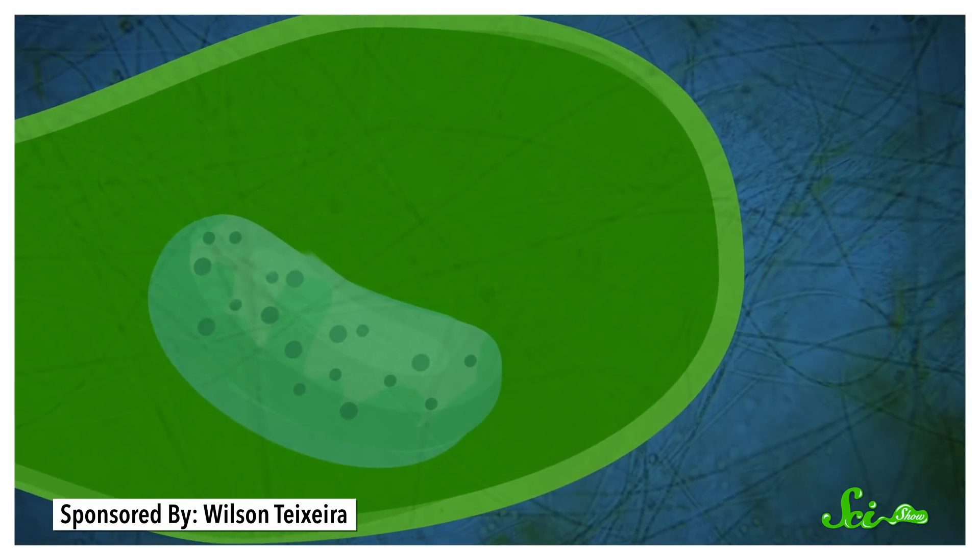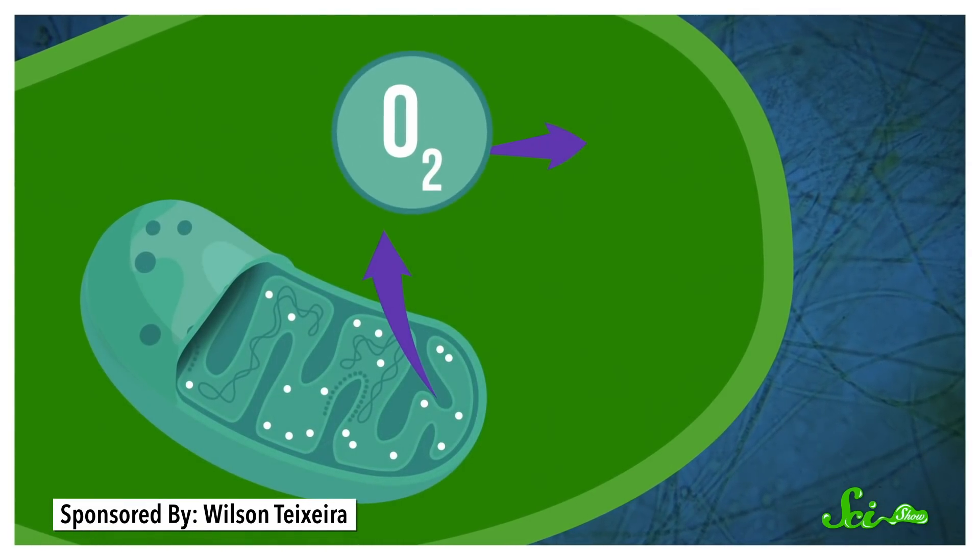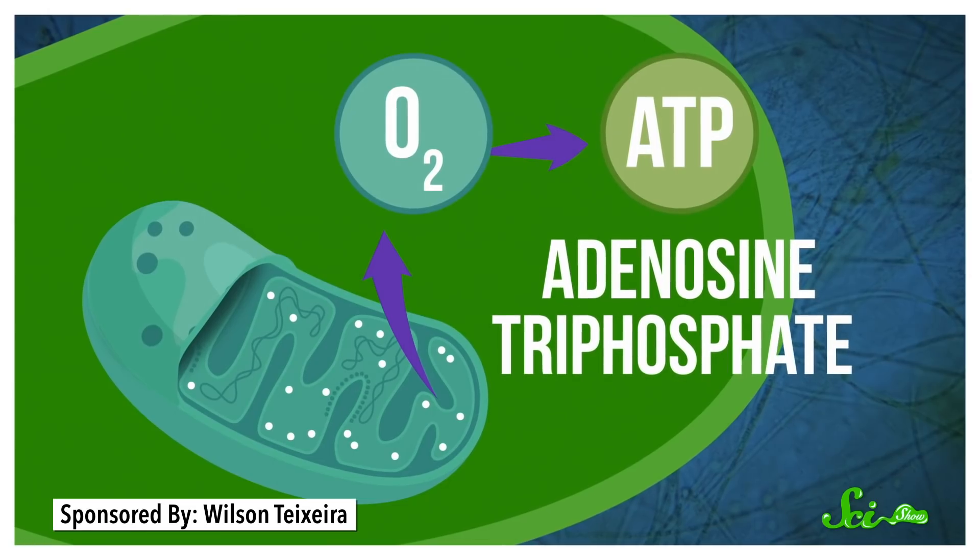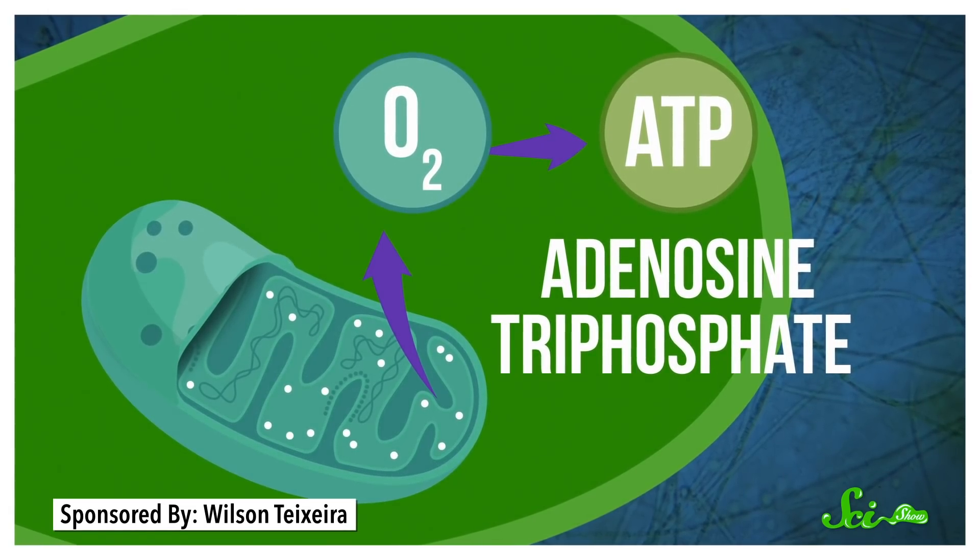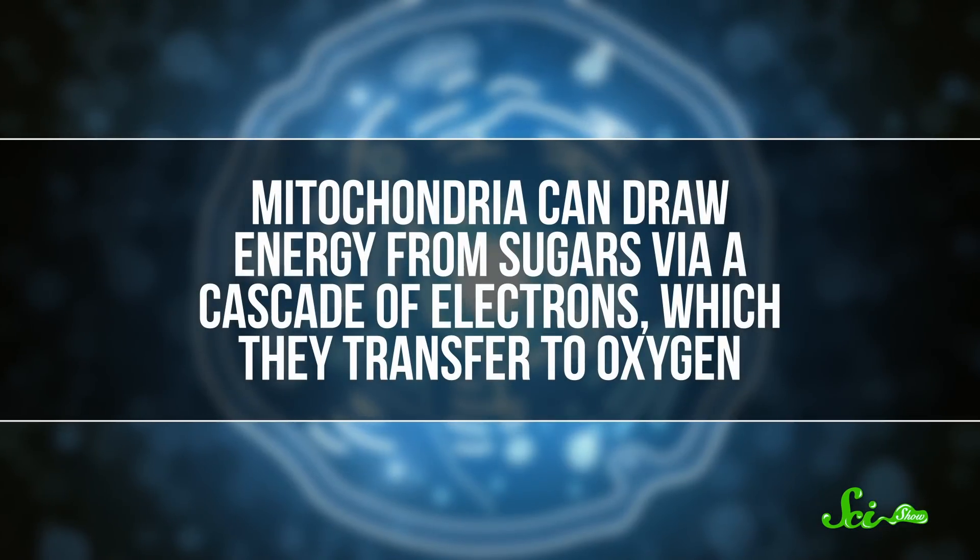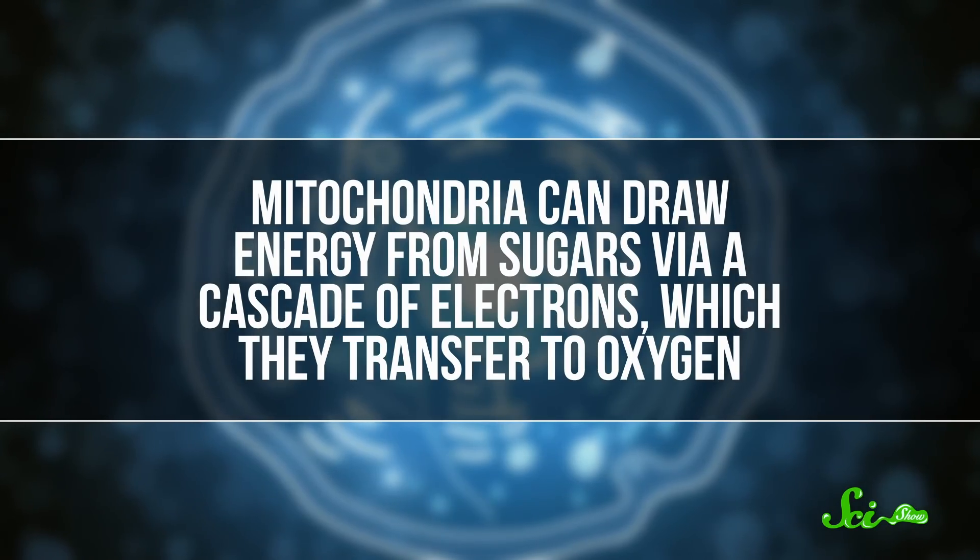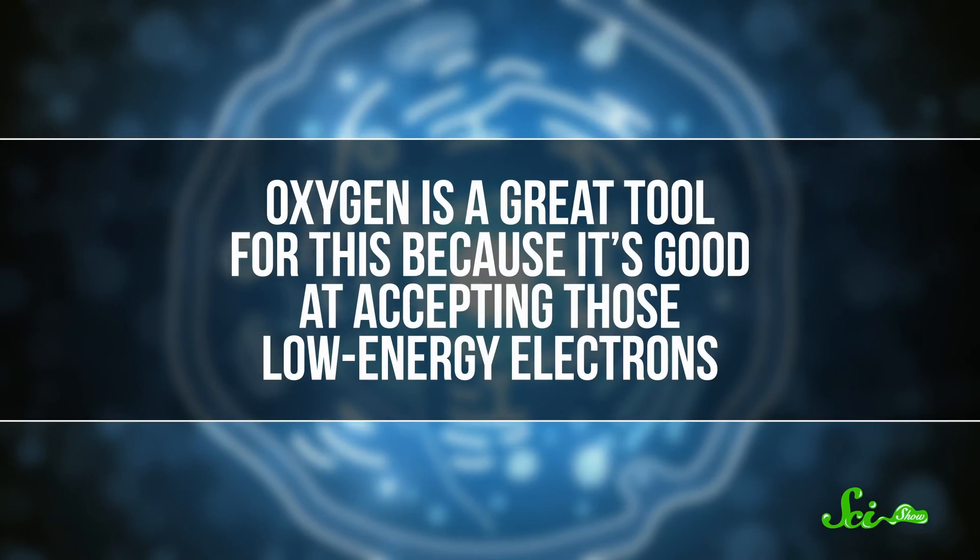Eukaryotes let that bacteria-turned-mitochondria stay because of their special talent. They use oxygen to make adenosine triphosphate, or ATP, the molecule that stores and transfers energy throughout the cell and the body. Mitochondria can draw energy from sugars via a cascade of electrons, which they transfer to oxygen. Oxygen is a great tool for this, because it's good at accepting those low-energy electrons. So when you're breathing, you're taking in oxygen and using it to generate the energy that keeps you going.